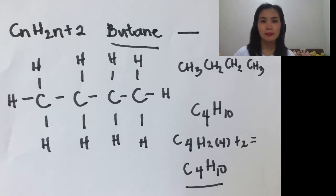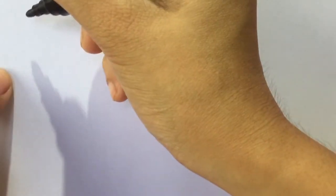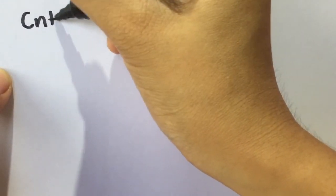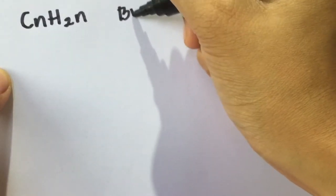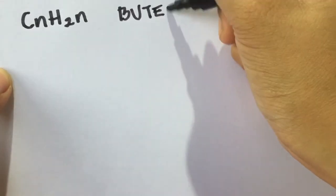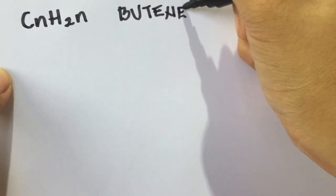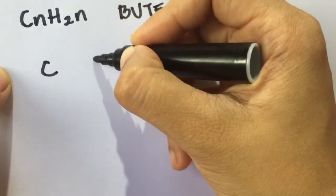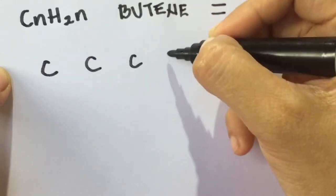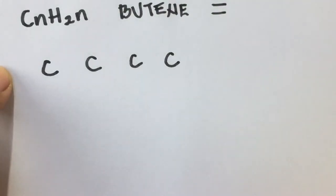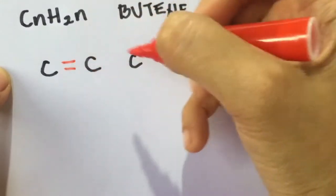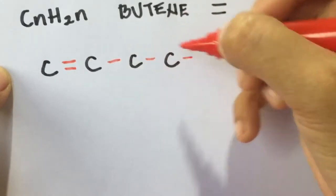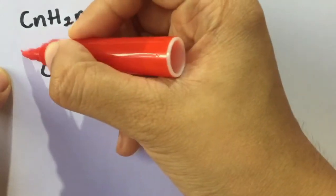How about the butene? Let's start. For the general formula of an alkene, we have CnH2N. So we are going to name it as butene, and it has double bond. Again, we will put first or write first the number of carbons. Unahin natin yung isulat yung carbon, apat na carbon. And then I'm going to use a red color to emphasize the bond. So CnH2N has double bond. Then one, two, three, four.